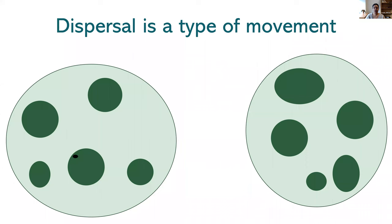Just to orient you to the major themes of my research: all of my research interests connect in some way with dispersal. Dispersal is a type of movement like migration. In this diagram you can see two different geographic regions. Within each region are embedded habitat patches — areas that have conditions suitable for the survival and reproduction of a species.